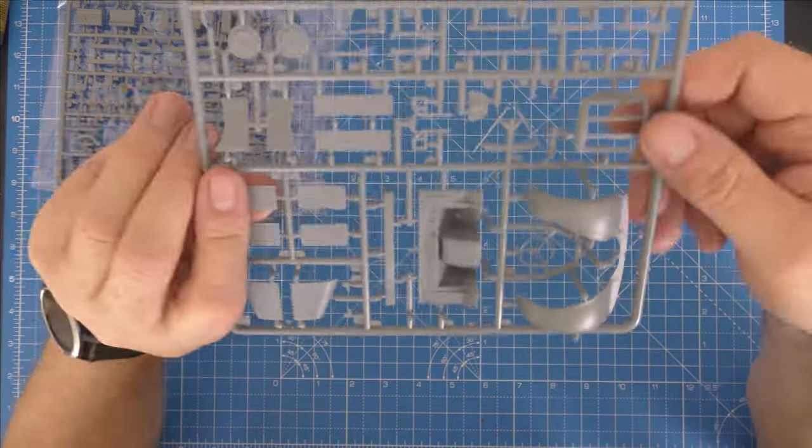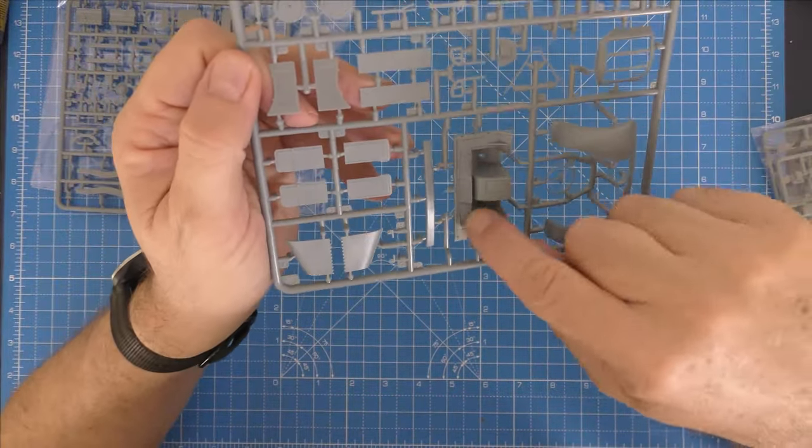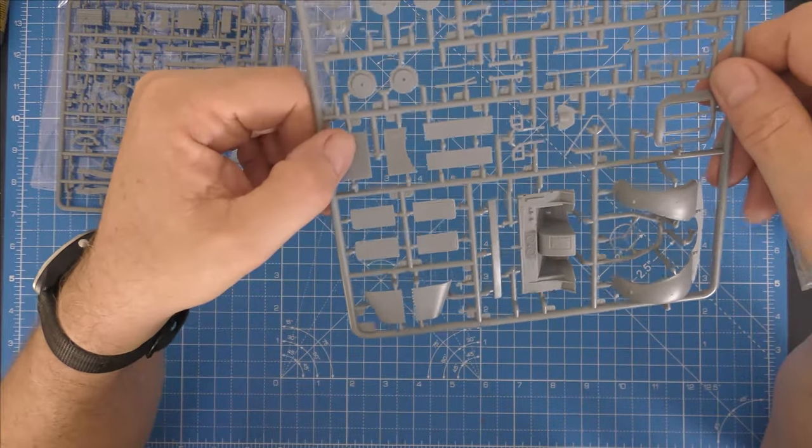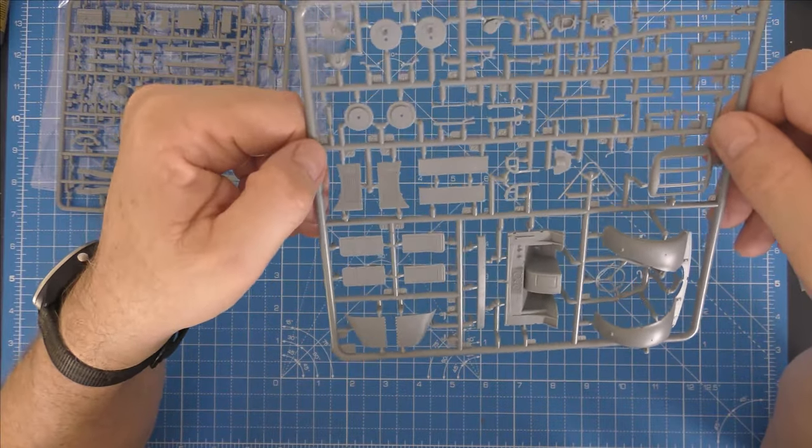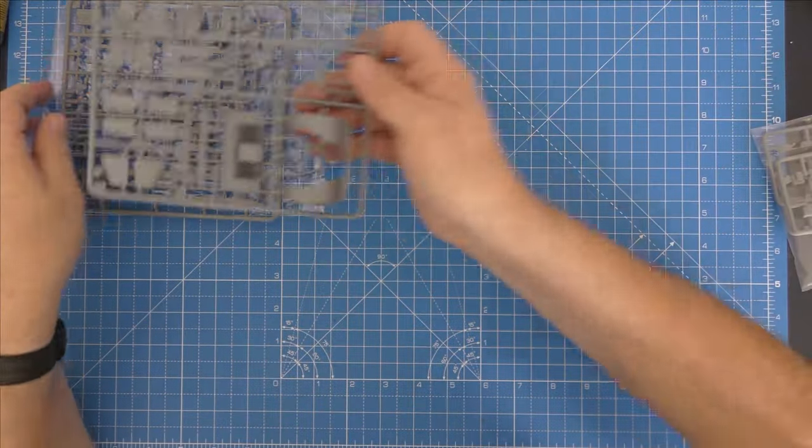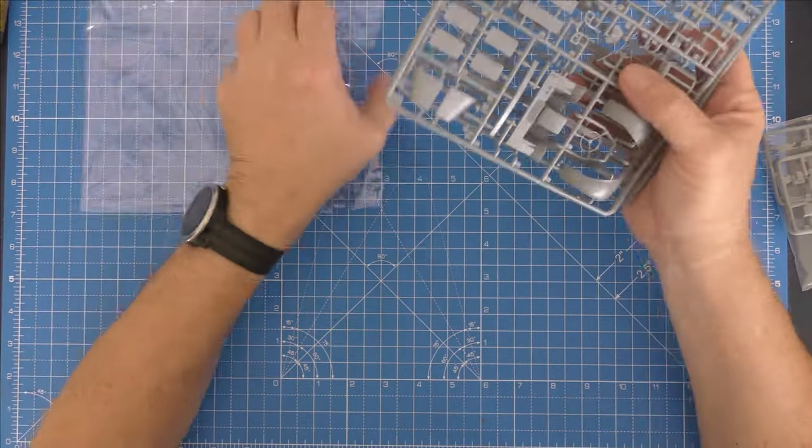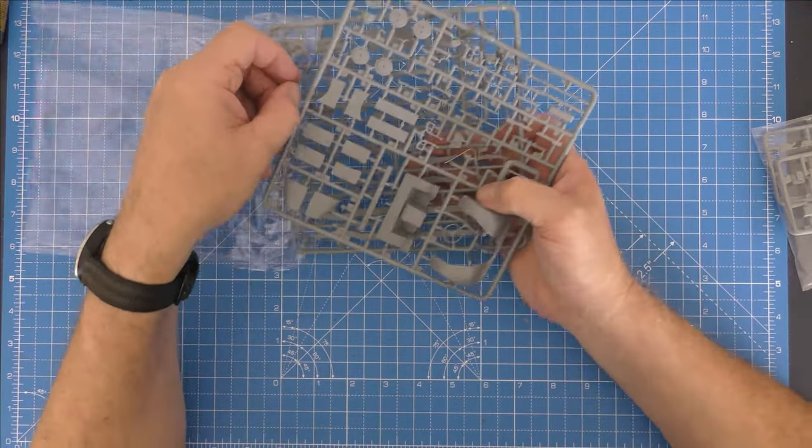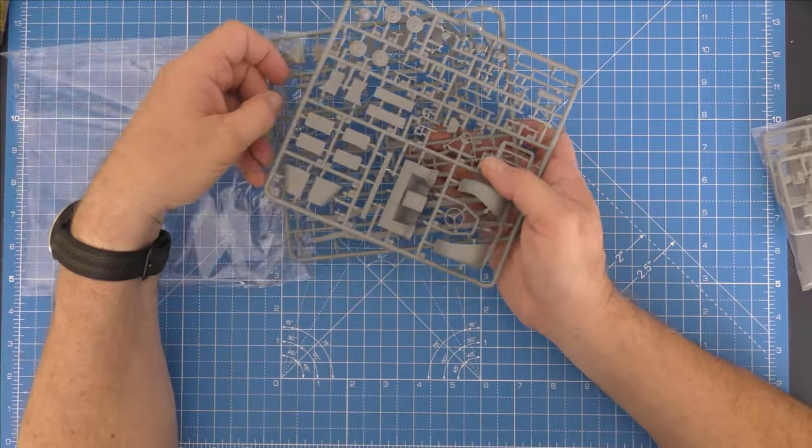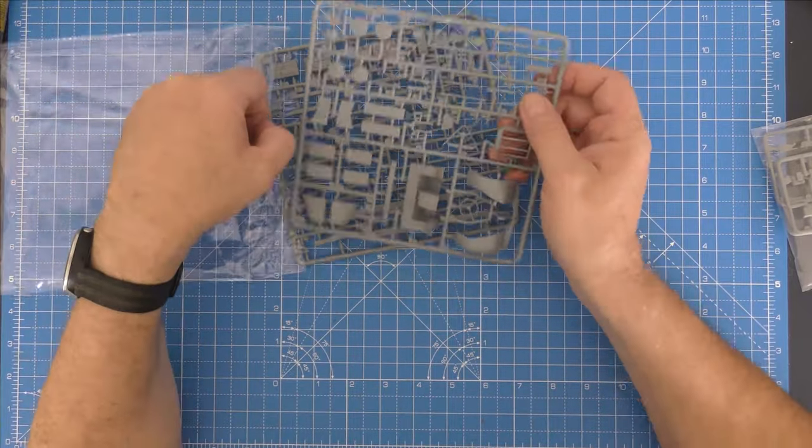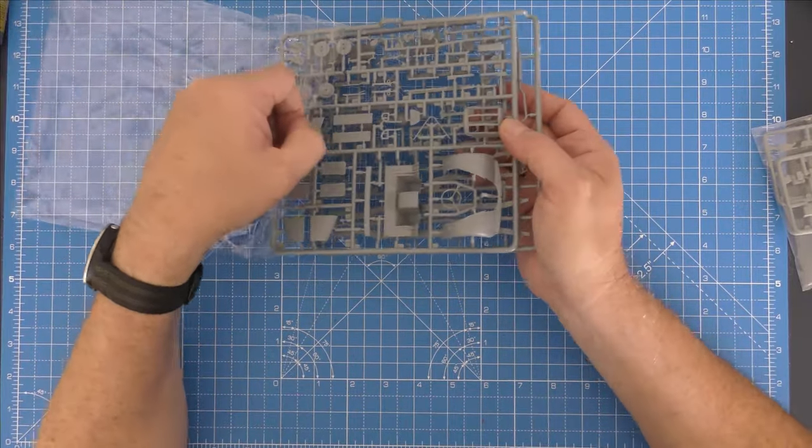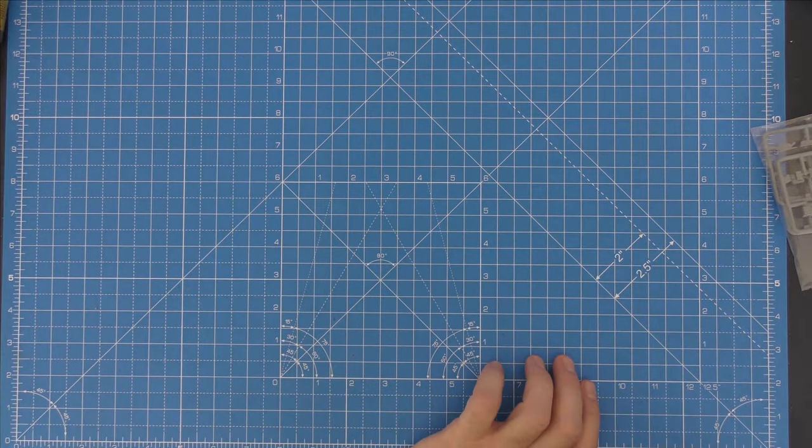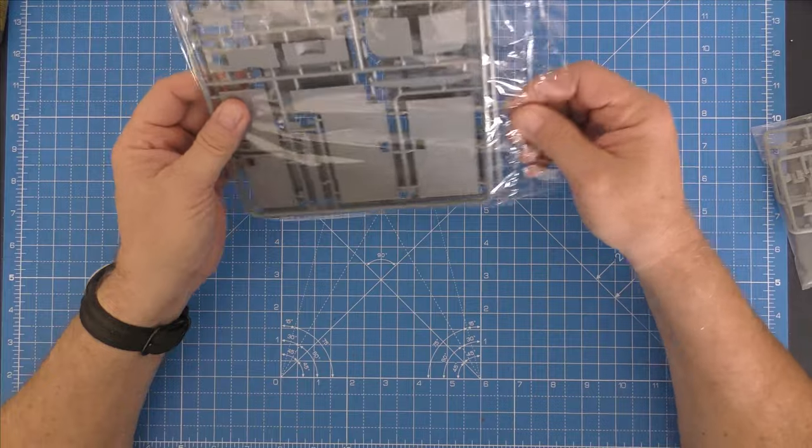And then you've got the front mudguards, the steering wheel, the dashboard, interior, bonnet, various other bits, the side panels. And this bag is sealed.